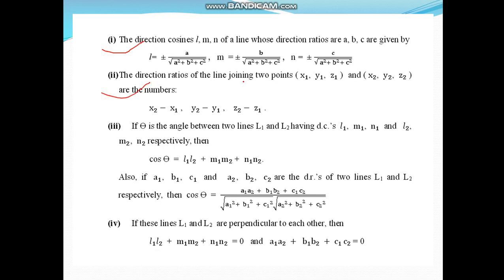Then we can find direction ratio of a line joining two points by this formula. If θ is the angle between two lines having direction cosines l₁, m₁, n₁ and l₂, m₂, n₂, then we can find cosine of angle between these two lines. But suppose if we are given direction ratios, then also we can find the angle between those two lines.